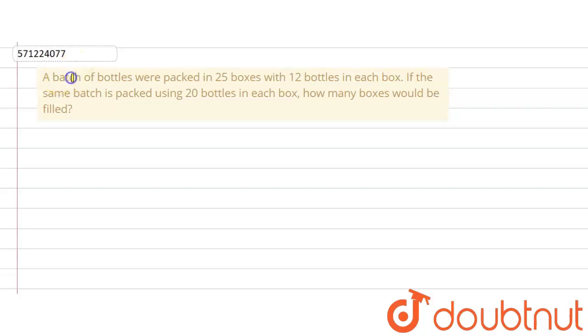The given question says that a batch of bottles were packed in 25 boxes with 12 bottles in each box. So one box contains 12 bottles and there are 25 such boxes.